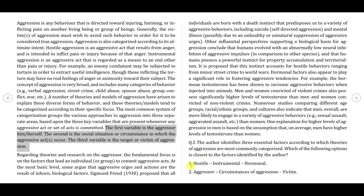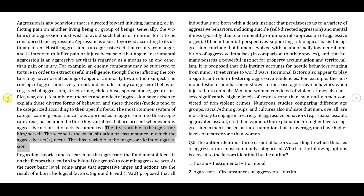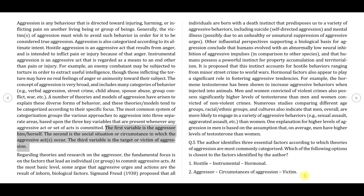Let's see what the other options say. The first one says hostile, instrumental, hormonal — this makes no sense and can be eliminated. The second one says aggressor, circumstances of aggression, and victim or the target. That matches all three variables directly from the passage. For completeness, the third option mentions extreme, moderate, mild — nowhere mentioned in the passage. The fourth says psychologically, sociologically, medically — also nowhere mentioned in the passage. These are irrelevant, extrinsic options. So we come back to option two: aggressor, circumstances of aggression, and victim — these are the three variables and this is the answer.